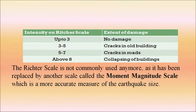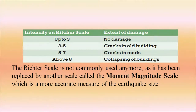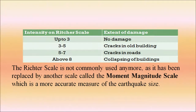A table showing intensity on the Richter scale and extent of damage: up to 3 — no damage; 3 to 5 — cracks in old buildings; 5 to 7 — cracks in roads; above 8 — collapsing of buildings. The Richter scale is no longer commonly used; it has been replaced by the Moment Magnitude Scale, which is a more accurate measure of earthquake size.